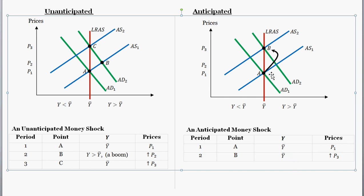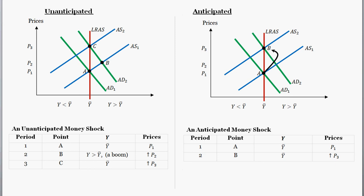There's basically no jump from point A to this point over here where there's a boom in the anticipated case. However, in the unanticipated case, you have this stop off at point B with a booming economy and then the jump back. Great. Hopefully that was helpful. Let me know if you have any questions. Thanks and have a good day. Bye.